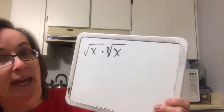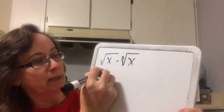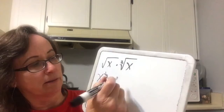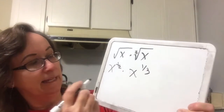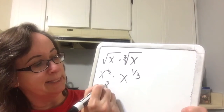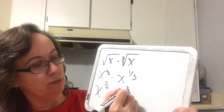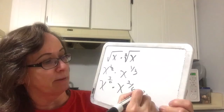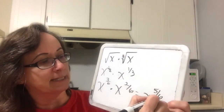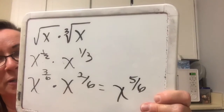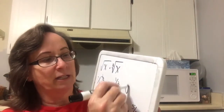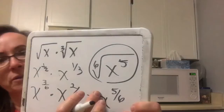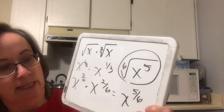Here we have a square root and a cubic root. So this would be x to the 1 half times x to the 1 third. I have to get a common denominator, so x to the 3 sixths times x to the 2 sixths. When I multiply like bases I add their exponents, getting x to the 5 sixths. Then I put it back under a radical, which would be the sixth root of x to the 5th. The sixth root of x to the 5th is the correct answer.